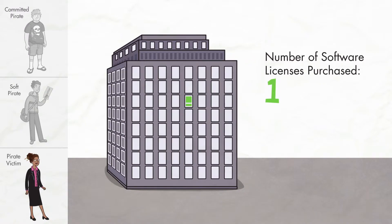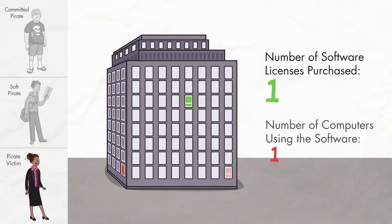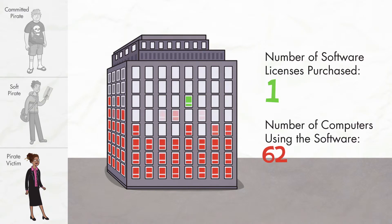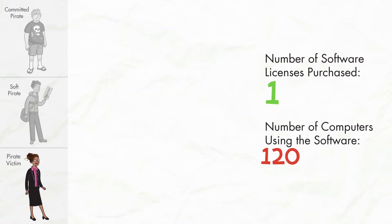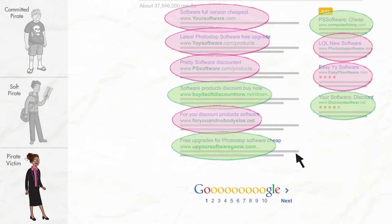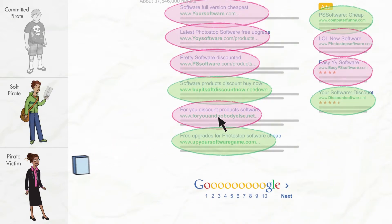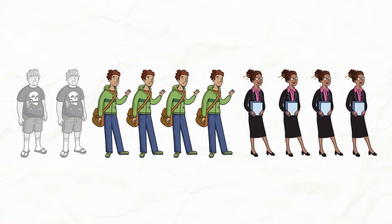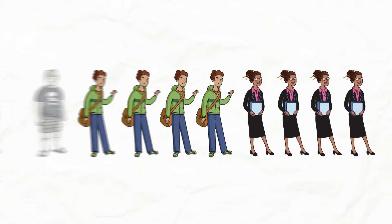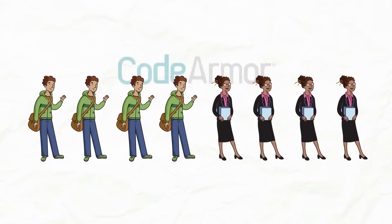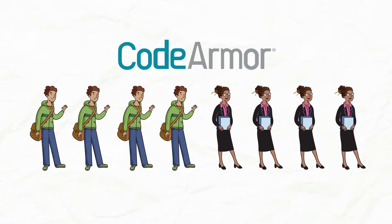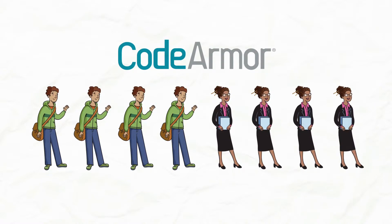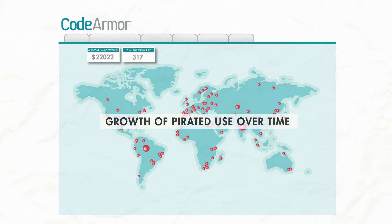And finally, there are those who have no idea that they're using unlicensed software. They might work for a large company that installed software onto everyone's computer using only one license, or they simply clicked a deceptive link in their browser. The soft pirates and pirate victims are legally inclined, well-intentioned users that make up 83% of unlicensed users in mature markets. These are the users who will pay for your software. So let us show you how you can use CodeArmor to identify and segment these users so you can alert them to their unlicensed use and drive them to become customers with targeted in-application messaging.